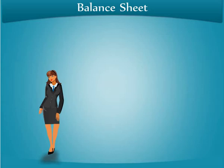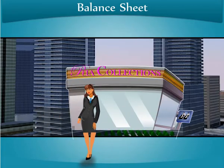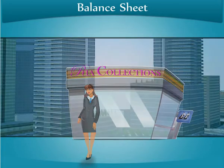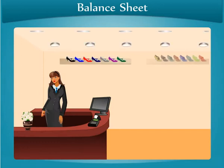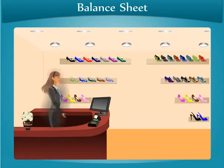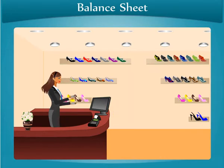Ria is a proprietor of Ria Collections, who is into manufacturing and selling of fashionable footwear. She takes a store on rent, first buys furniture, and then acquires the stock. Now the store is decorated and set. She starts her business, the shoppers keep pouring in, and the sales are up. Ria is really happy counting money.